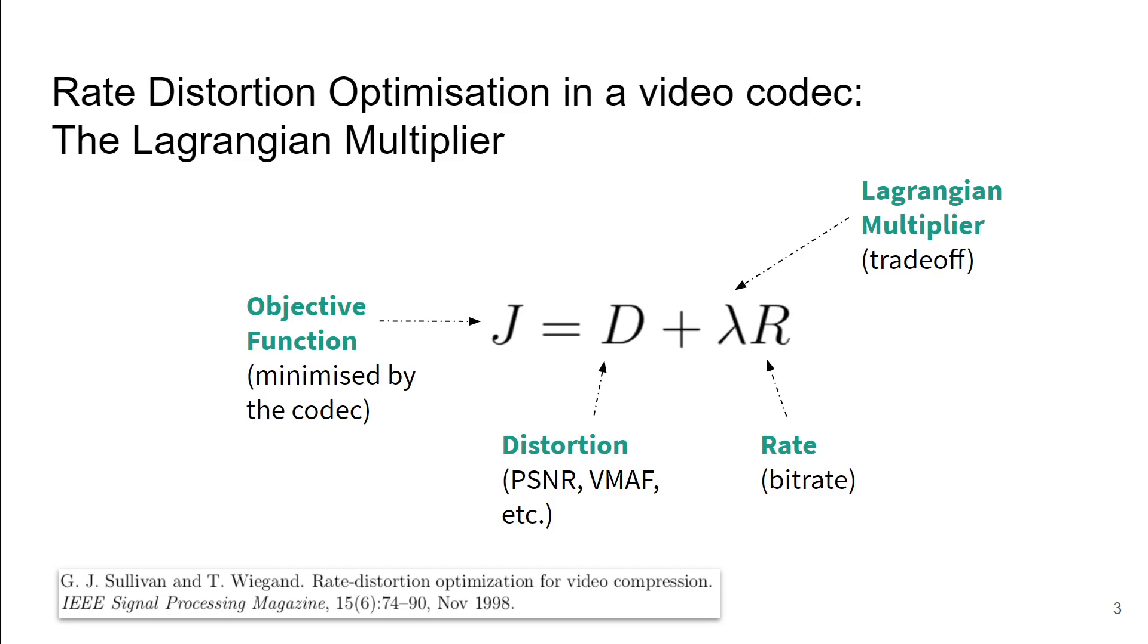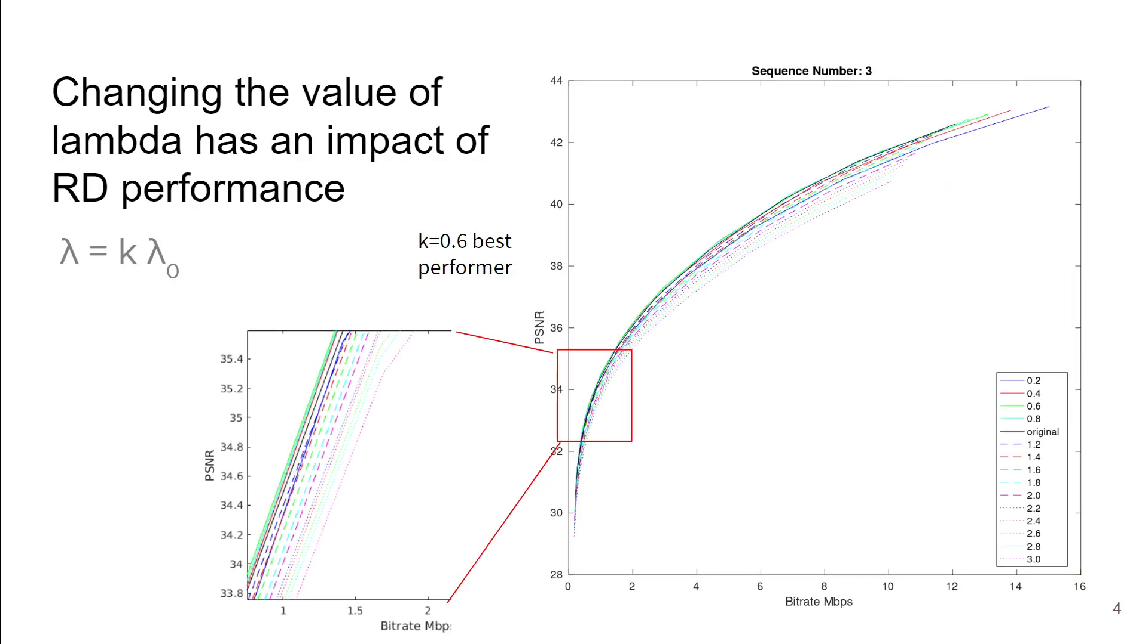Within codecs, there exists a rate distortion optimization that focuses on trying to minimize an objective function which has a Lagrangian multiplier applied as a trade-off for the distortion and the rate within a compressed bitstream. We know that manipulating this has some impact on the performance of a codec on a given clip.